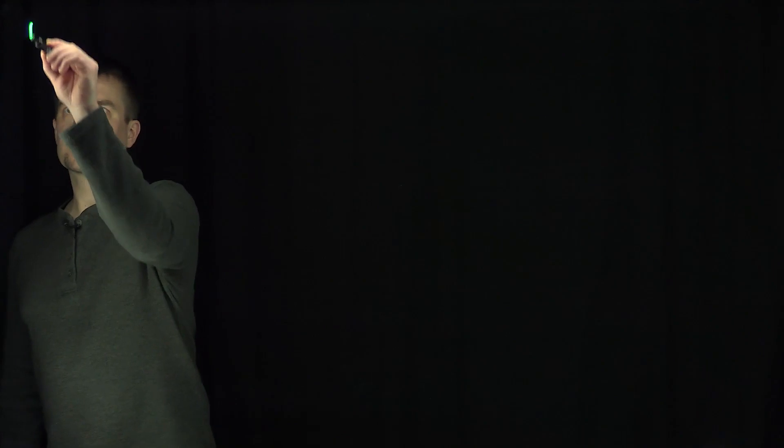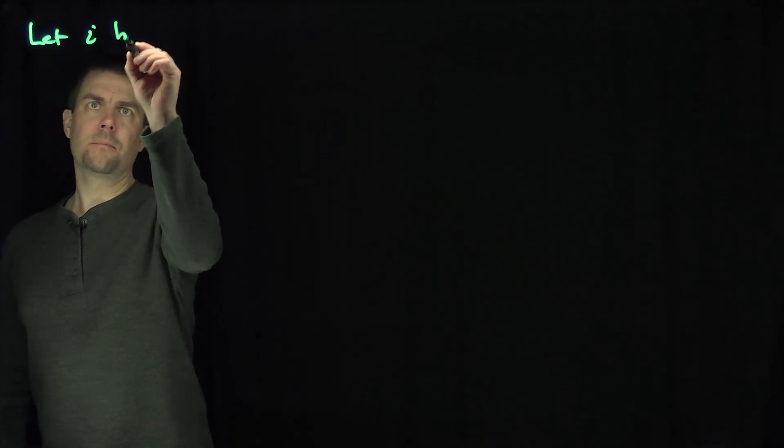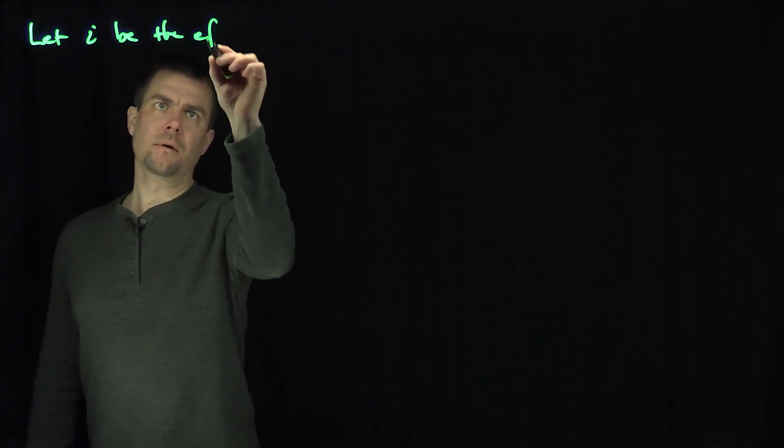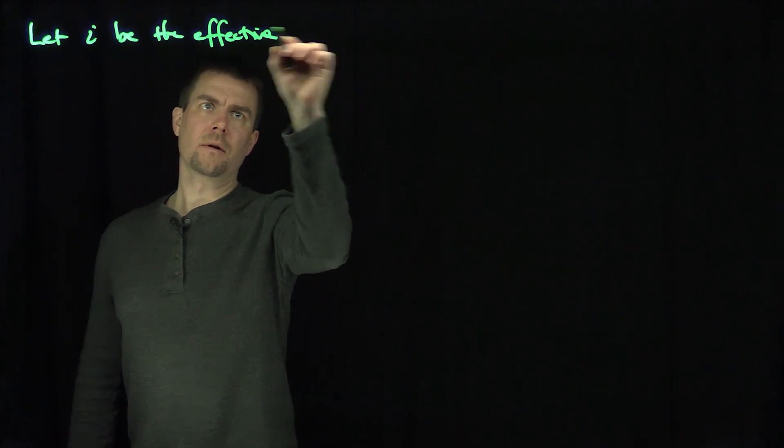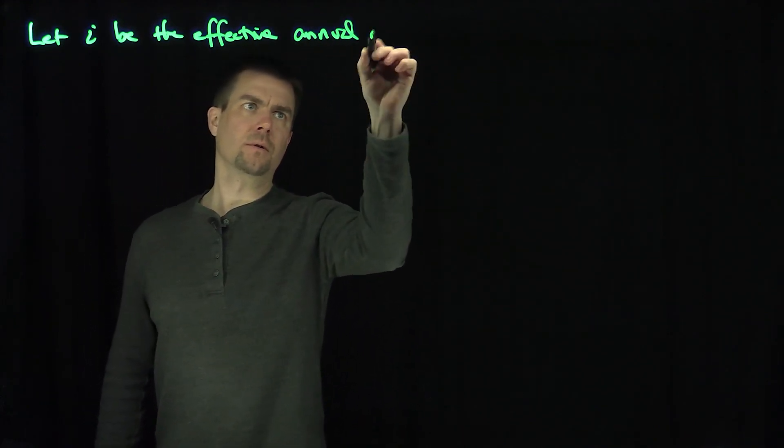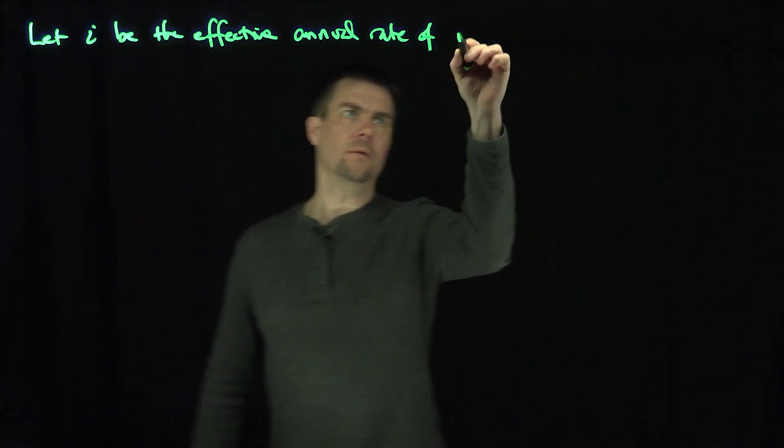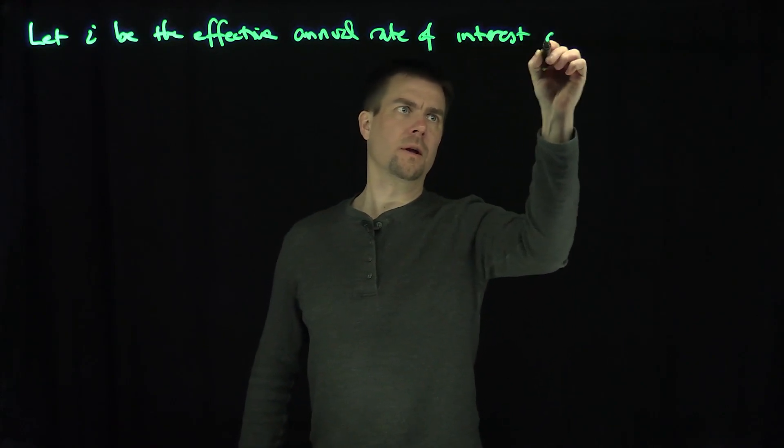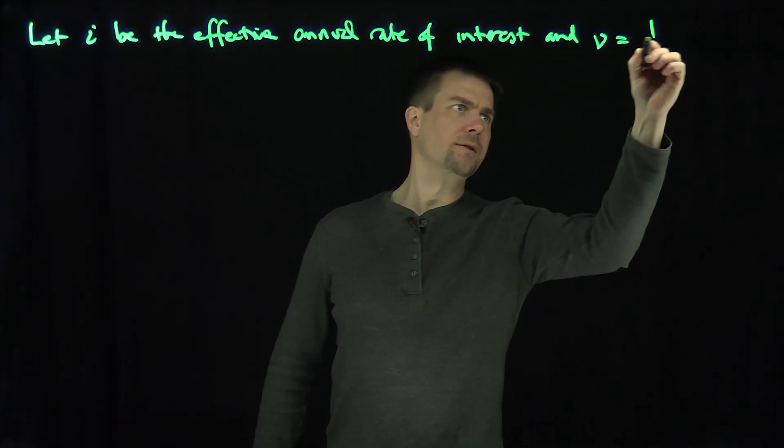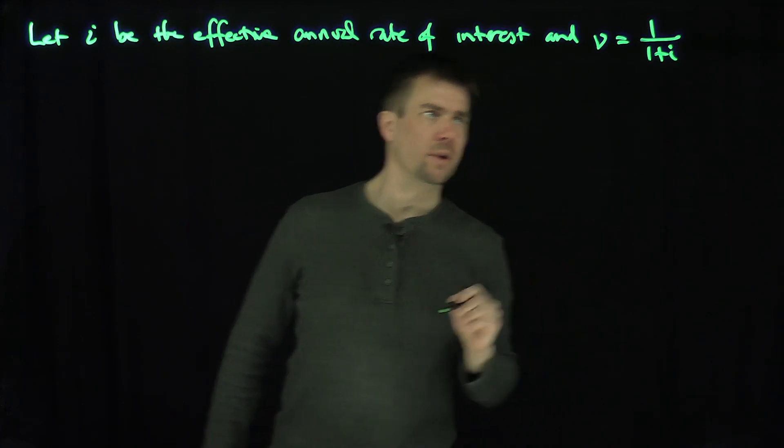Hello, students. In this video, we'll discuss deferred annuities and annuities over longer periods of time. Let i be the effective annual rate of interest, and v is the present value factor 1 over 1 plus i.